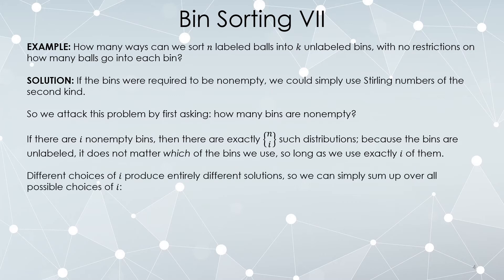Different choices of how many non-empty bins we use produce different solutions — using three bins versus five is a very different thing. So we sum over all possible choices of i, where i ranges from one to k. If k is sufficiently large — at least as large as n — we just get Bell numbers, since the sum of Stirling numbers of the second kind as i goes from one to n gives the nth Bell number. But if we have, say, ten labeled balls and only seven unlabeled bins, we only count partitions using up to seven subsets — something between a Bell number and a Stirling number.